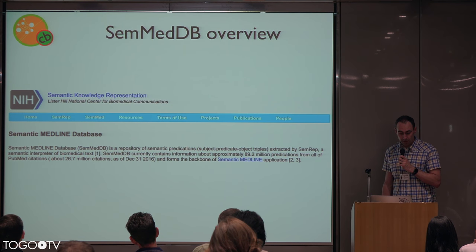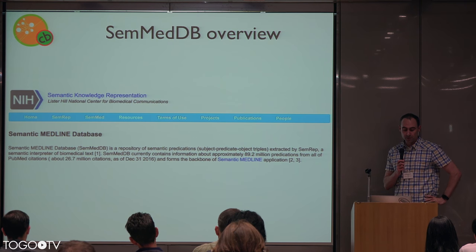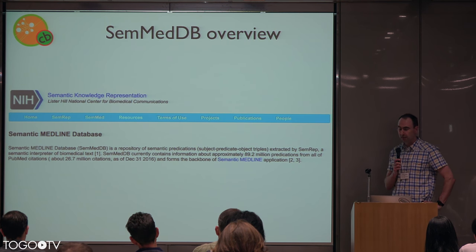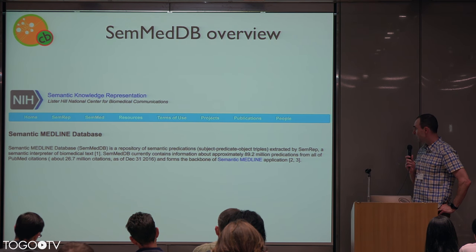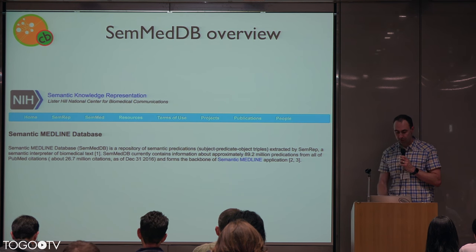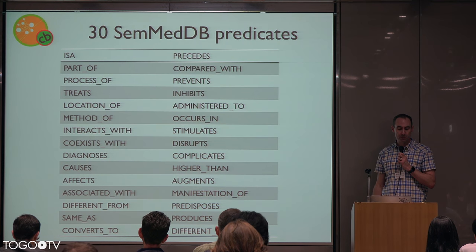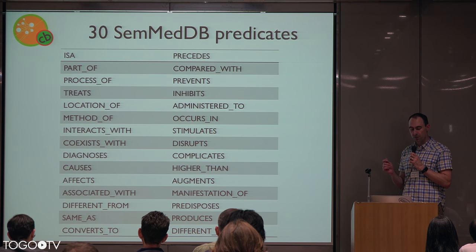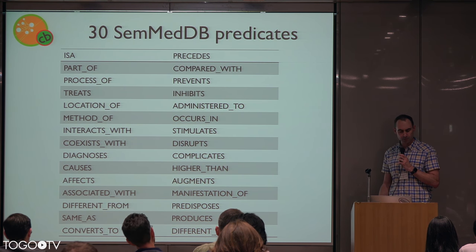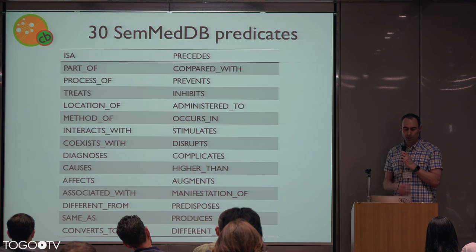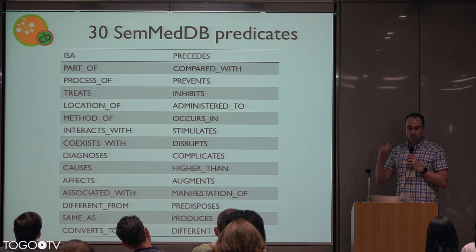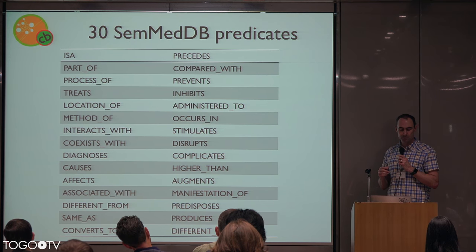SemMedDB is a repository of assertional annotations that have been mined using NLM's SemRep tool from PubMed. They number 89 million total relations. One of the reasons I think this is a good place to start is the variety of predicates — they have 30 different predicates that they mine, and they also mine the negation of most of these. So one of the things I'm interested in doing is trying to create knowledge representations using the OBOs as a vocabulary for many, if not all, of these predicates.